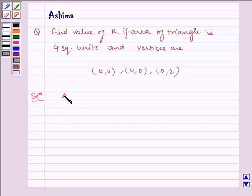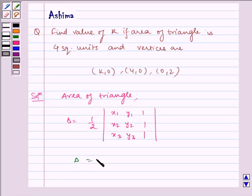We know area of triangle is given by half into x1, y1, 1, x2, y2, 1, x3, y3, 1 and given to us is area is equal to 4 square units.